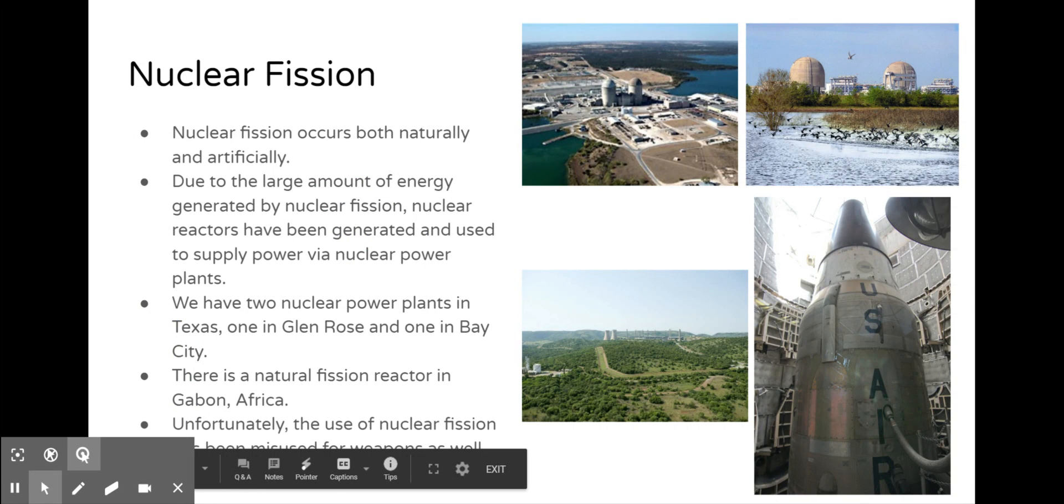Nuclear fission occurs both naturally and artificially. Due to the large amount of energy generated by nuclear fission, nuclear reactors have been generated and used to supply power via nuclear power plants. We have two nuclear power plants here in Texas, one in Glen Rose and one in Bay City, and there is a natural fission reactor in Gabon, Africa.